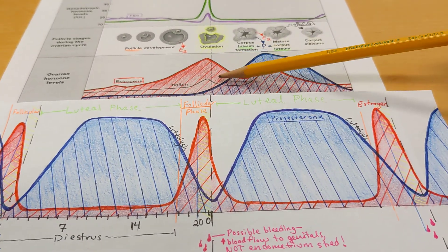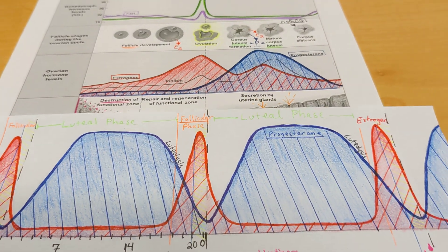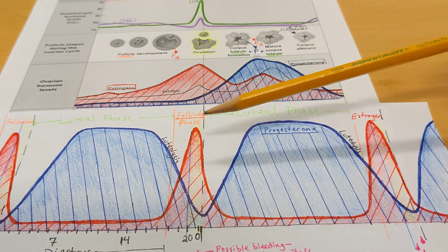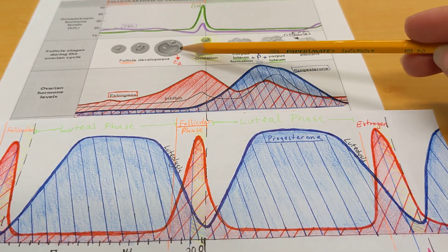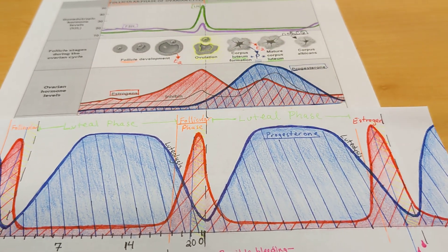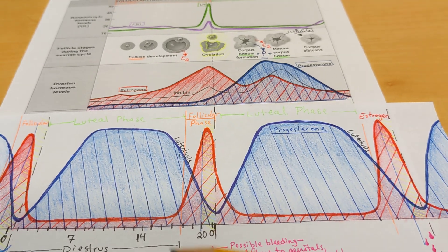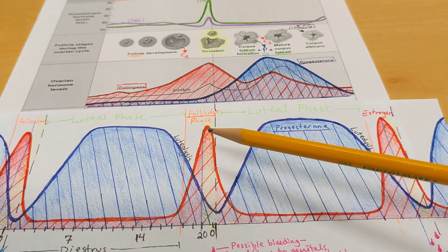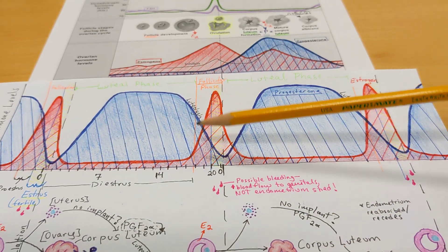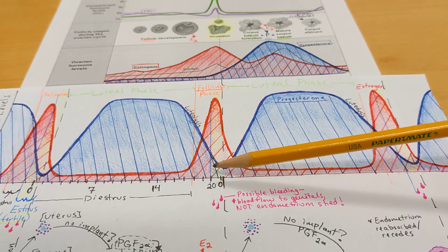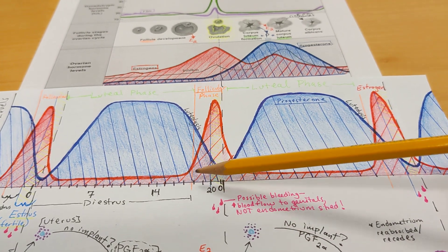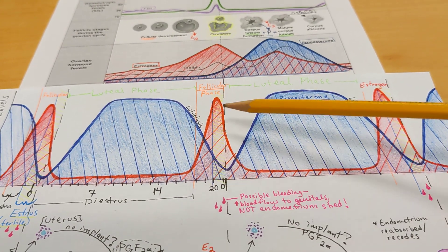The follicular phase of both the human and the estrus cycling animal is called the follicular phase because the follicle is secreting estrogen and therefore it is the dominant structure during this period. While the pattern is the same — an increase in estrogen secreted by the dominant follicle in both types of animals — the follicular phase is much shorter in the estrus cycling animal.